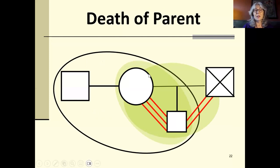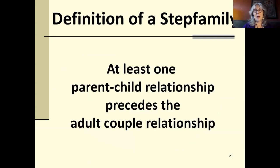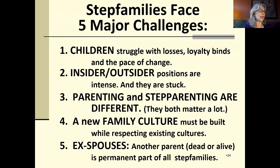Parent-child relationships are forever. So it's the same structure. And sometimes the challenges we're going to talk about are even more intense for kids. All of these forms have in common that at least one parent-child relationship precedes the adult-couple relationship. That's what creates these five challenges.